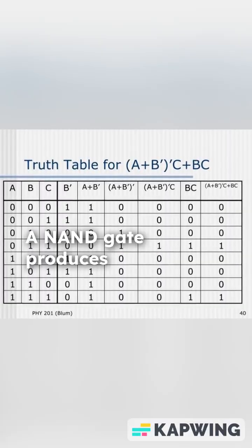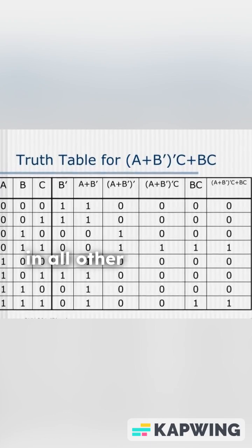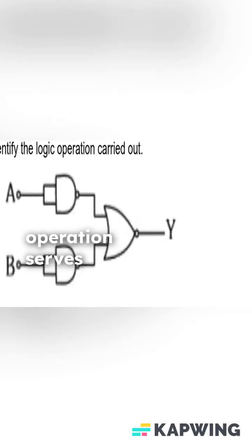A NAND gate produces an output of zero only when both of its inputs are one. In all other scenarios, it outputs a one. This simple yet powerful logic operation serves as the basis for more complex functions.